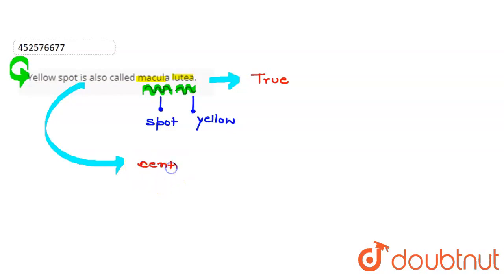This is the center of our eye, or the sharpest sight place. Or you can say, this portion of our eye is present in the center of retina.